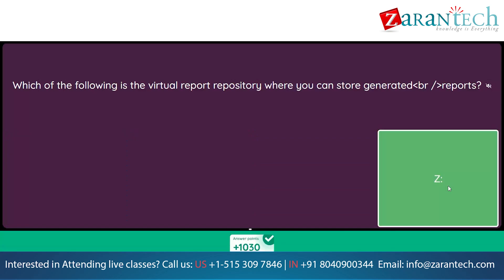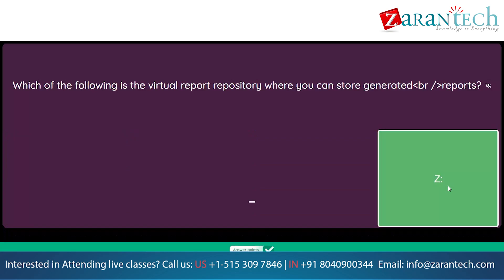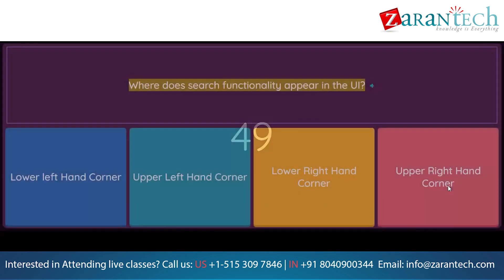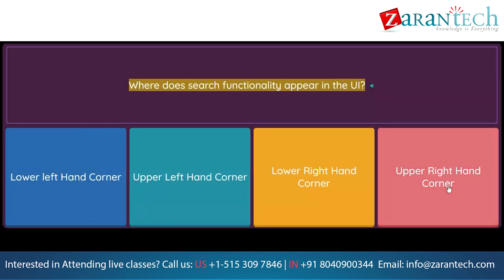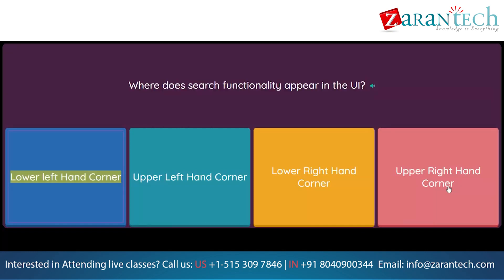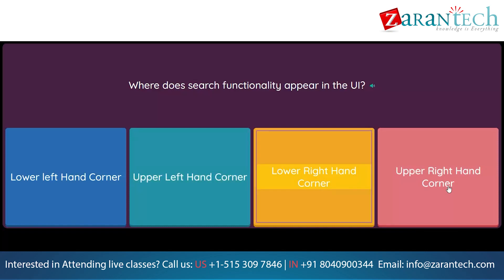Where does search functionality appear in the UI? Option 1: Lower left-hand corner. Option 2: Upper left-hand corner. Option 3: Lower right-hand corner. Option 4: Upper right-hand corner.